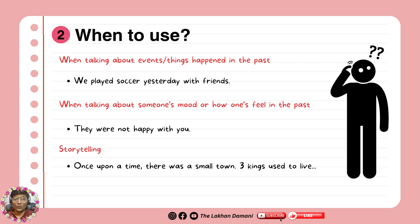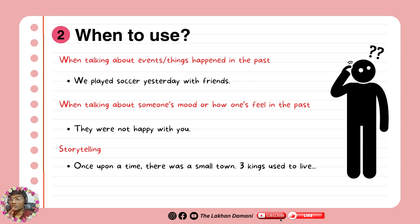The second point: when talking about somebody's mood or how someone was feeling in the past. For example, they were not happy with you — we are talking about a moment in the past when they were not happy, so we used were. If you're confused why we use were here, it's because of the sentence structure. Here the sentence structure is simple, not continuous — that's why we are using it. I'm going to teach you the sentence structure.